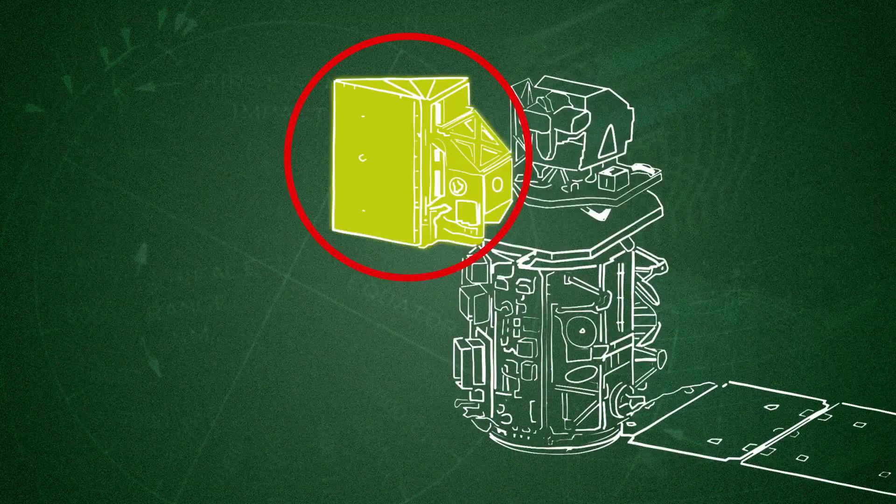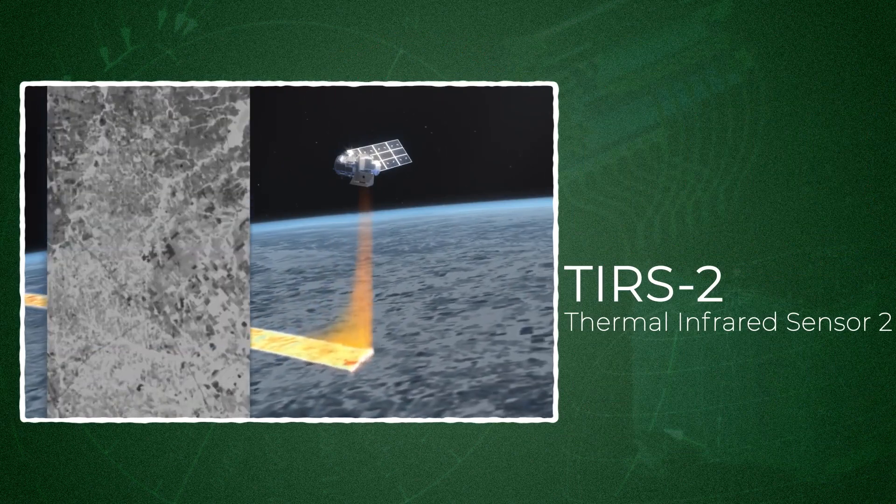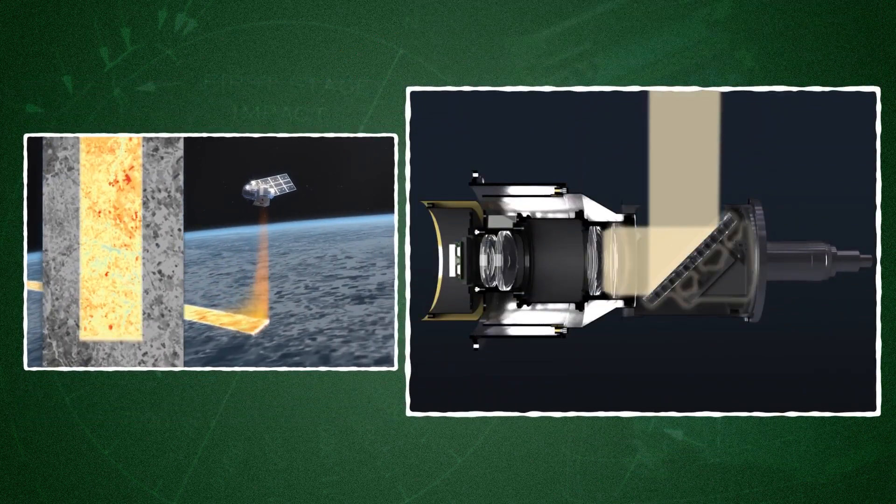The second instrument aboard Landsat 9, called TIERS-2, collects thermal infrared wavelengths, or temperature signatures emitted by the Earth itself.